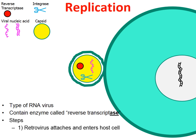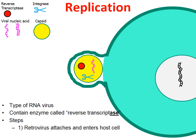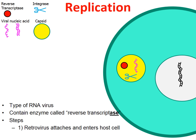The outer envelope of the retrovirus is a lipid, a phospholipid bilayer. The two fuse together, and as they fuse, the retrovirus is taken into the host cell. The yellow capsid is then dissolved and begins to break down, which releases the enzymes of the retrovirus and the RNA nucleic acid of the retrovirus.